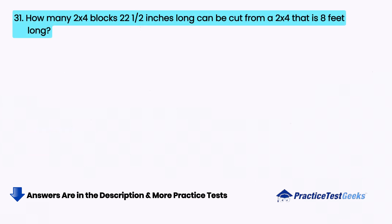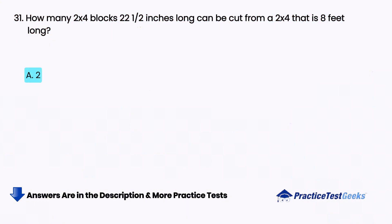How many 2x4 blocks, 22 and a half inches long, can be cut from a 2x4 that is 8 feet long? A. 2, B. 4, C. 6, D. 8.